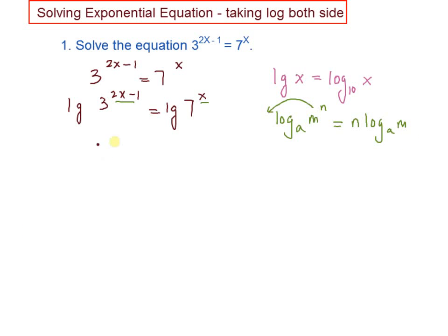For this equation, you have the power 2x minus 1 you bring in front. Remember to use a bracket here. Times log 3 equal to x log 7.